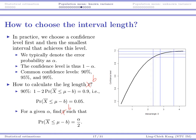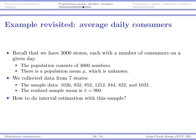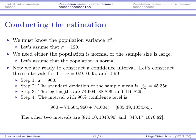Let's go back to our motivating example about daily consumers. Recall that we have this number of stores, and we have 3,000 numbers as our population. There is a population mean, but we don't know it. We collected data and get 7 observed values. Their values are here so that we can calculate the realized sample mean, which is 960. So far, all we know is the technique with a known population variance. Let's assume sigma is 120.